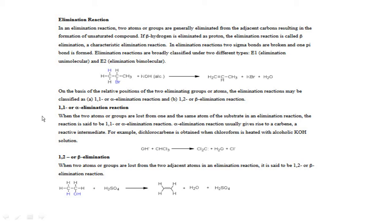Elimination reactions are of two types: E1 reaction and E2 reaction. E1 means elimination unimolecular, and E2 means elimination bimolecular — the same analogy as SN1 and SN2 reactions. SN1 is nucleophilic substitution unimolecular, and SN2 is nucleophilic substitution bimolecular. Similarly, for elimination reactions we call them E1 and E2.